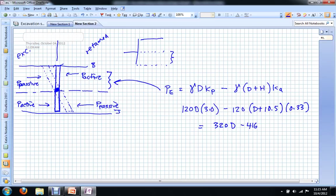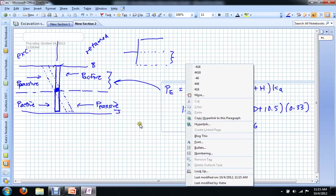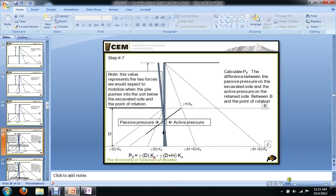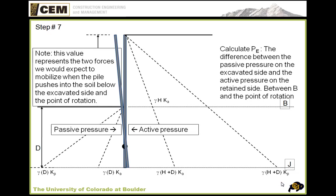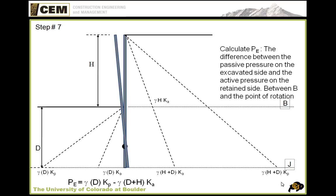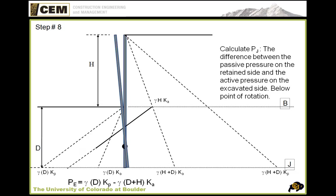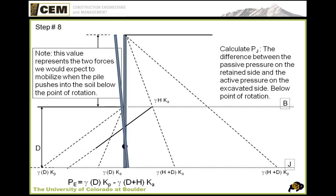We've done P sub E, which covers the region from the point of rotation up to plane B. Now let's talk about what we're going to call P sub J. We're not going to continue P sub E past the point of rotation — that's going to be quite important. P sub J is what's occurring below the point of rotation all the way down to plane J, which is the tip of the pile. There, we have active pressure on the excavated side and passive pressure on the retained side, which is opposite to what we had above the point of rotation. The point of rotation is our switch.